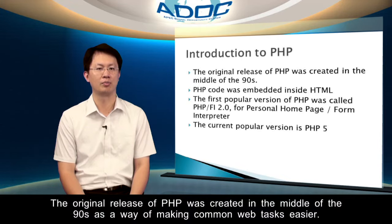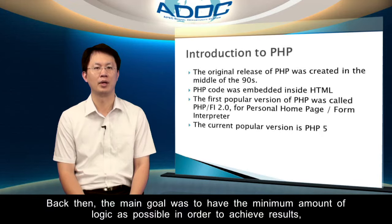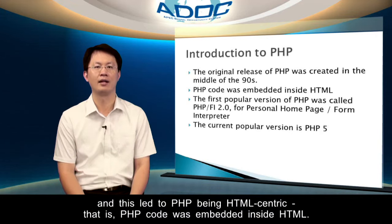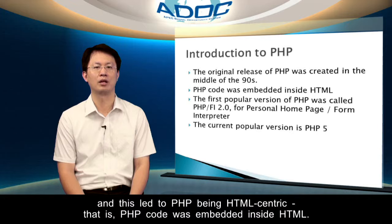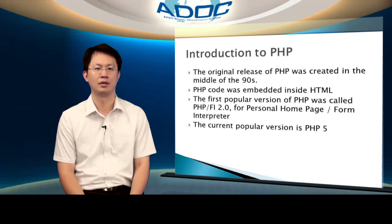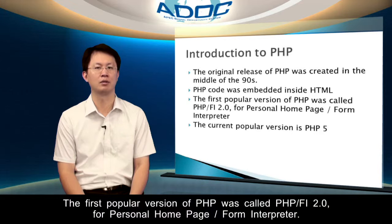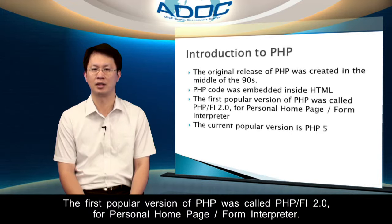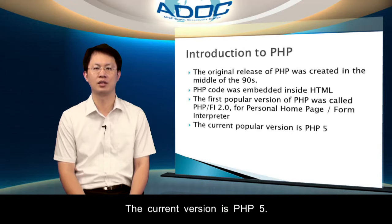The original release of PHP was created in the middle of the 90s as a way of making common web tasks easier. Back then, the main goal was to have the minimum amount of logic as possible. In order to achieve results, this led to PHP being HTML-centric — that is, PHP code was embedded inside HTML. The first popular version of PHP was called PHP-FI 2.0, for personal homepage form interpreters. The current version is PHP-5.